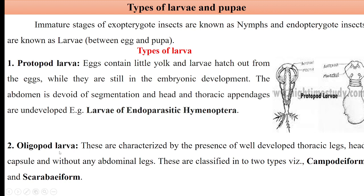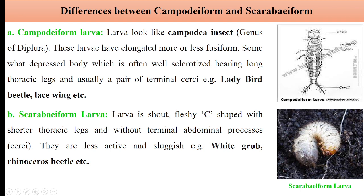Then coming to the second type, that is oligopod larvae. They are characterized by well-developed thoracic legs and head capsule, but they have no abdominal legs or pseudo-legs. They are further classified into Campodeiform and Scarabaeiform. The Campodeiform larvae is named after the Campodea genus of Diplura. The larvae are elongated or somewhat fusiform, the body is depressed, the head is sclerotized, and they possess well-developed longer thoracic legs, and usually a pair of terminal abdominal cerci. This type is found in case of ladybird beetles and lacewings — they are very active predators on small insects like aphids and scales.